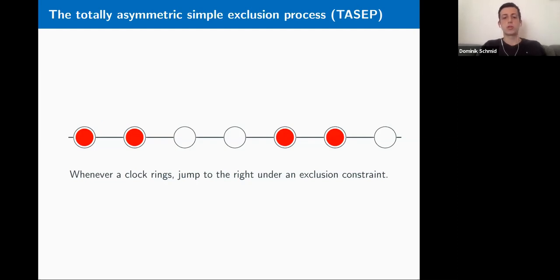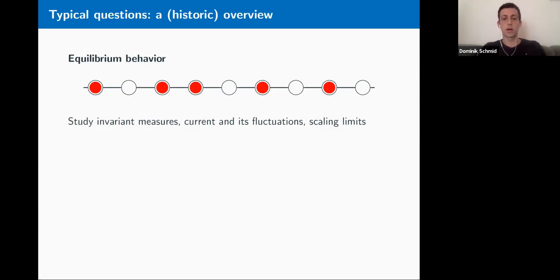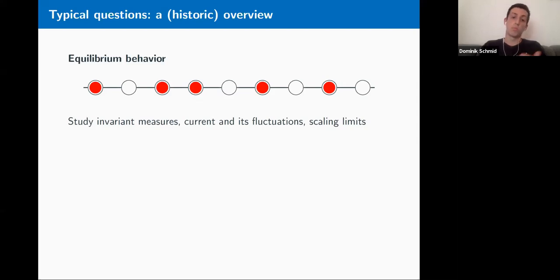Given such an interacting particle system — TASEP — one of the first questions you ask is: what can you say about invariant measures of your system? In the case of exclusion processes, this is a very classic question, going back to when the model was introduced by Frank Spitzer in 1970. It turns out that for TASEP, the non-trivial invariant measures are actually all mixtures of Bernoulli product measures.